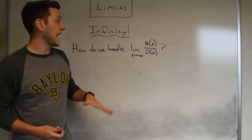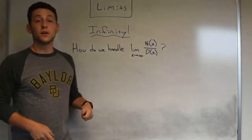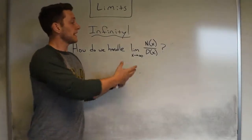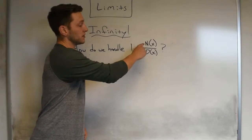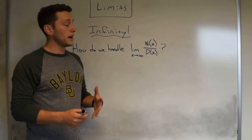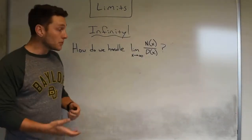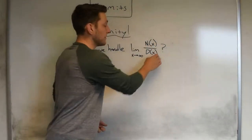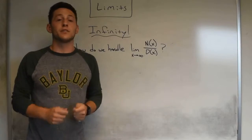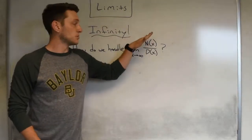Now let's talk about what happens when we handle the limit as x approaches infinity — or negative infinity — of a rational function. If we plugged in infinity, assuming neither polynomial is just a constant, we'd more often than not get infinity divided by infinity, which is an indeterminate form telling us we need a little more algebra. However, we can actually shortcut this process by looking at the degree of the numerator and denominator.